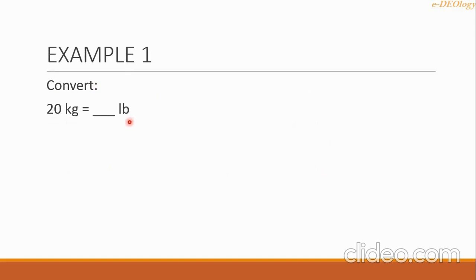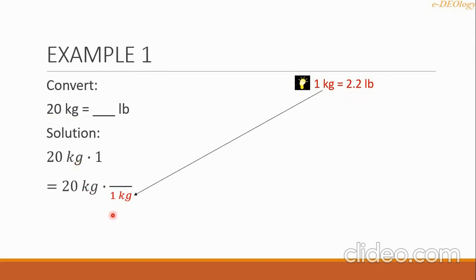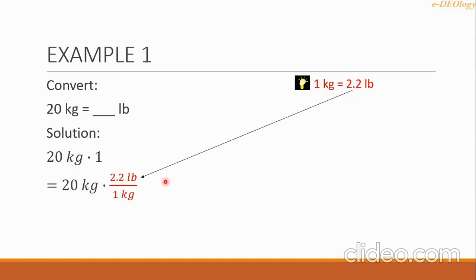Convert 20 kg to pounds — 20 kg equals blank LB. We use the conversion 1 kg equals 2.2 LB. We multiply 20 kg by a value equal to 1, placing 1 kg in the denominator and 2.2 in the numerator, so we can cancel the kg unit. Then 20 multiplied by 2.2 equals 44. So the final answer is 44 pounds.